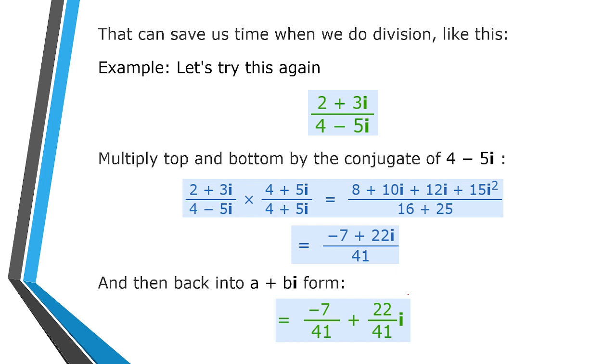That can save us time when we do division like this. Example: let's try this again. (2+3i)/(4-5i). So multiply by the conjugate of the denominator in the numerator and denominator. Then the denominator becomes a² plus b². Then the top we distribute, so 8+10i+12i+15i². We get (-7+22i)/41.